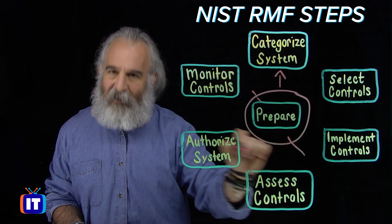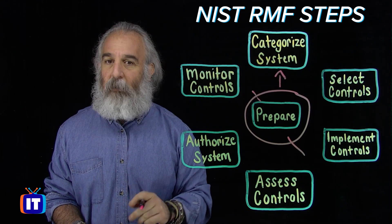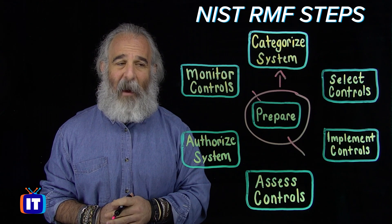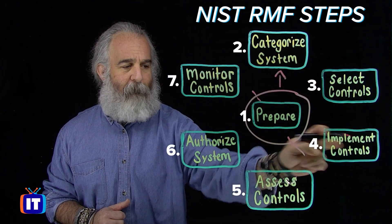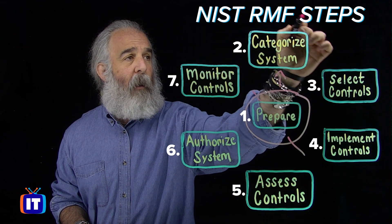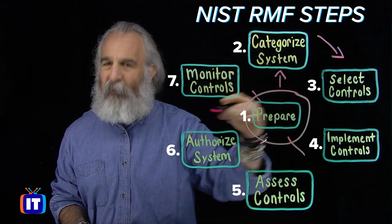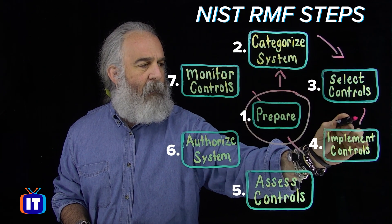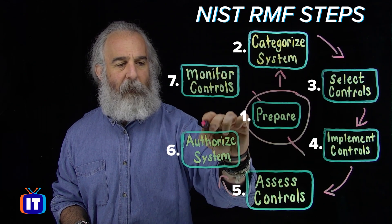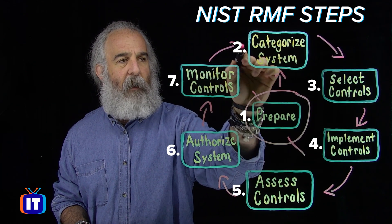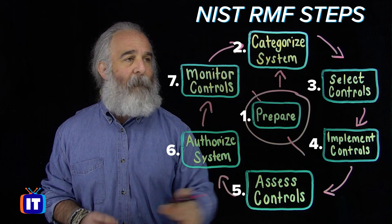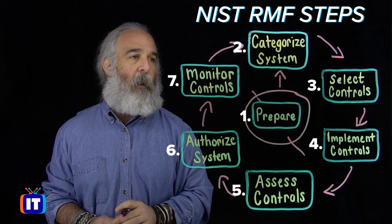We're going to move to categorize, which will be step two of the RMF process overall — seven steps overall. We're going to see the flow become an iterative flow that cycles clockwise and allows us to understand how all of these phases and steps come together. We hand off from each of the steps as we move. As we prepare, we should be thinking about the steps involved with getting ready to take action.